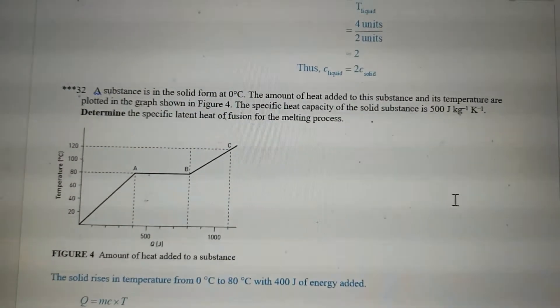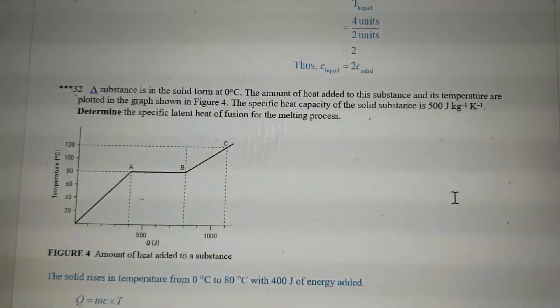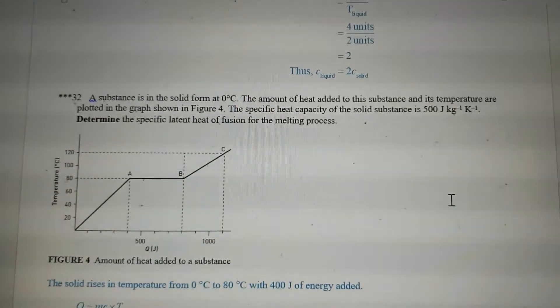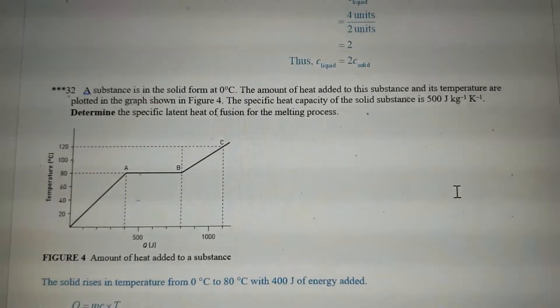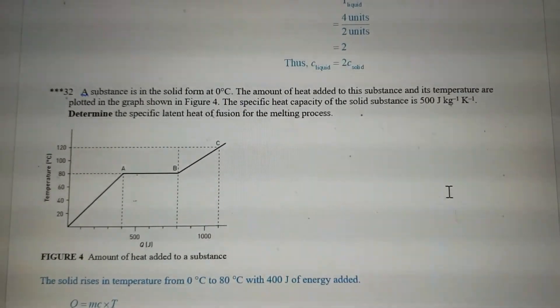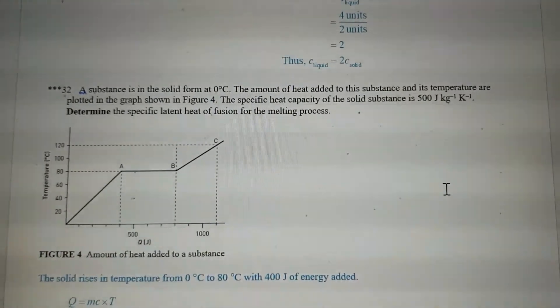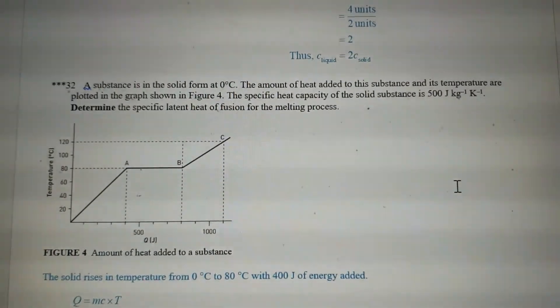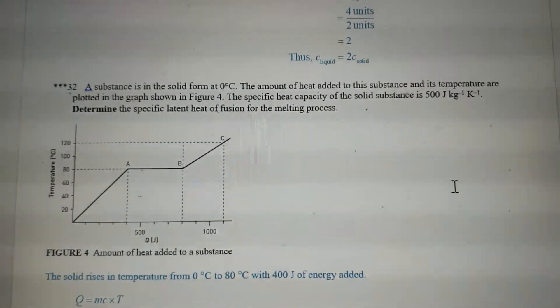This one is interesting. Substance in a solid form at 0 degrees. The amount of heat added to the substance and its temperature are plotted in the graph below. Specific heat capacity of the solid is 500 joules per kilogram per degree Kelvin. Determine the specific latent heat of fusion for the melting process.